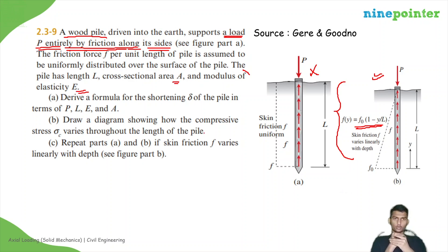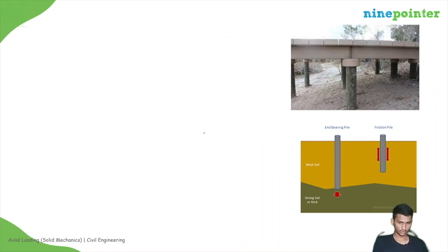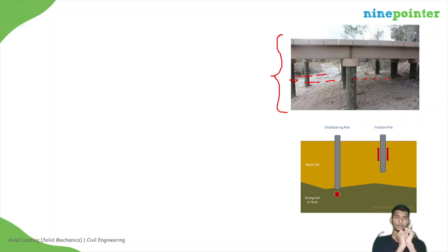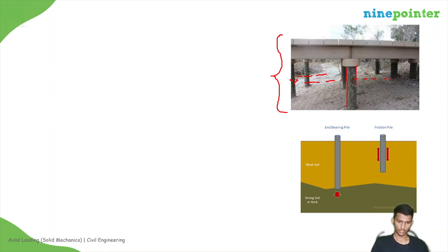Before solving this question, let us see where you can observe this type of pile in the practical world. These structures are supported by piles, generally when there is water involved — for example, a bridge over water or a dam. You can see circular piles which are driven into the earth. The weight and traffic load is supported by these piles.